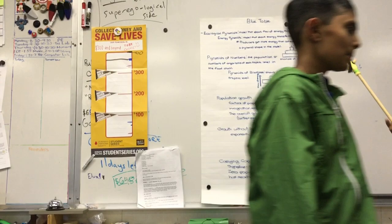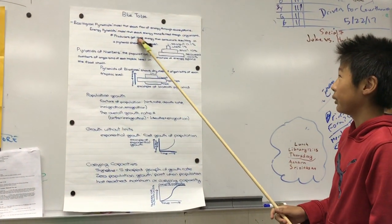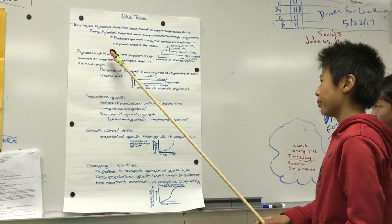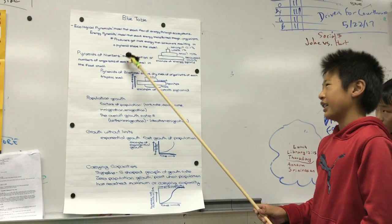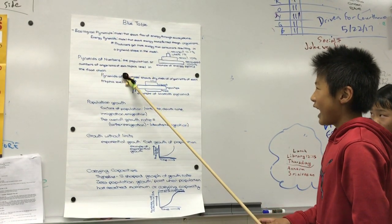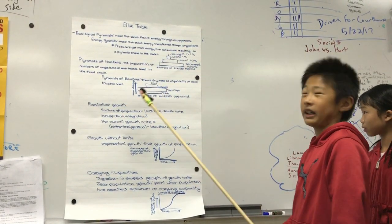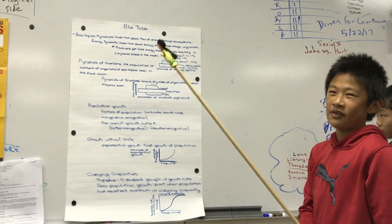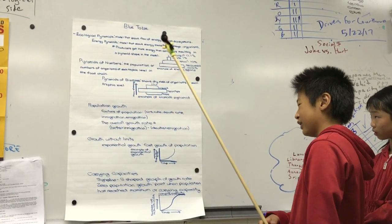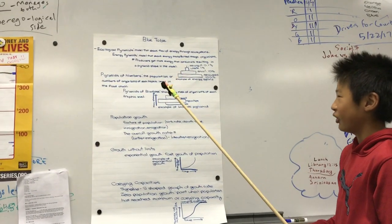Some other pyramids, such as pyramids of numbers, show the flow of energy through ecosystems. It shows the population of numbers or organisms at each trophic level in the food chain. For example, it can show how many grass are living in a certain population in the first trophic level. And then in the second trophic level, it may show how many rabbits there are.